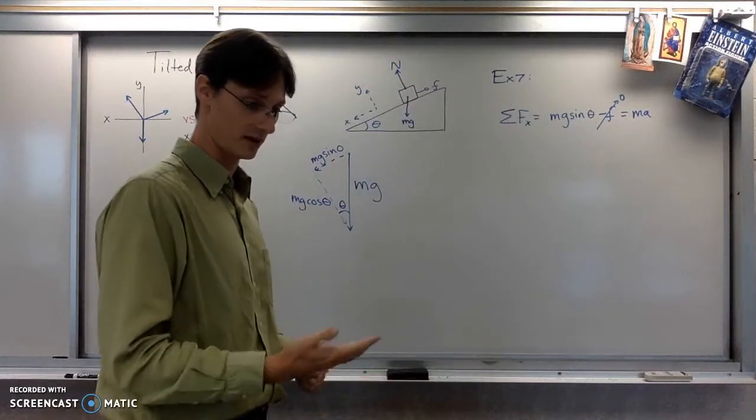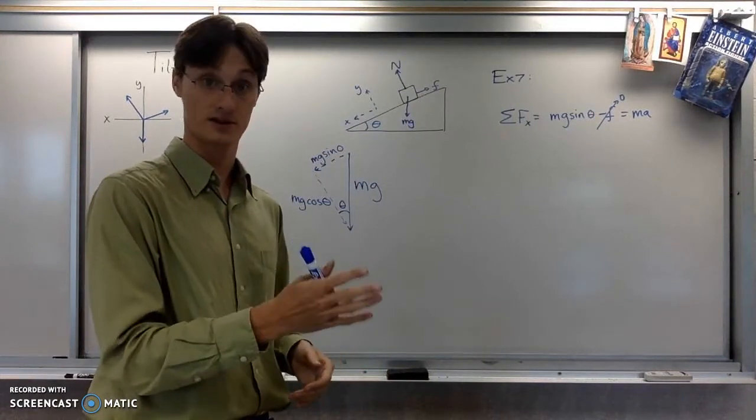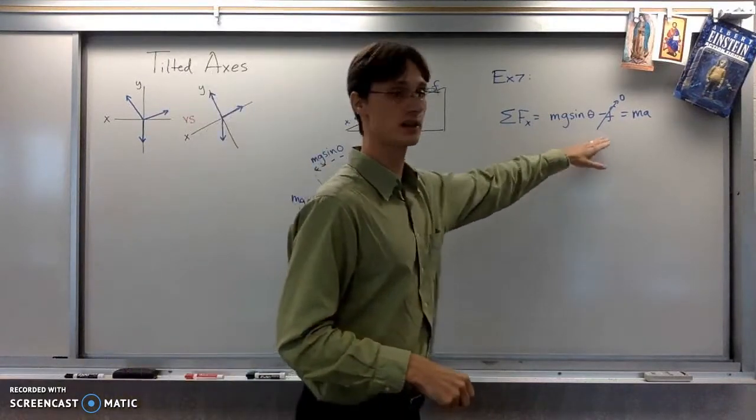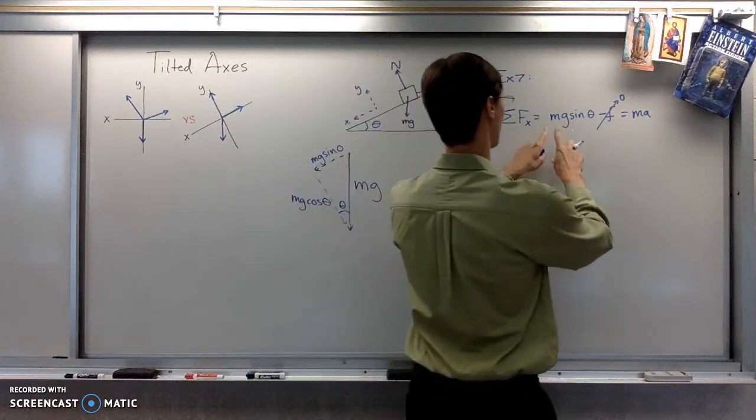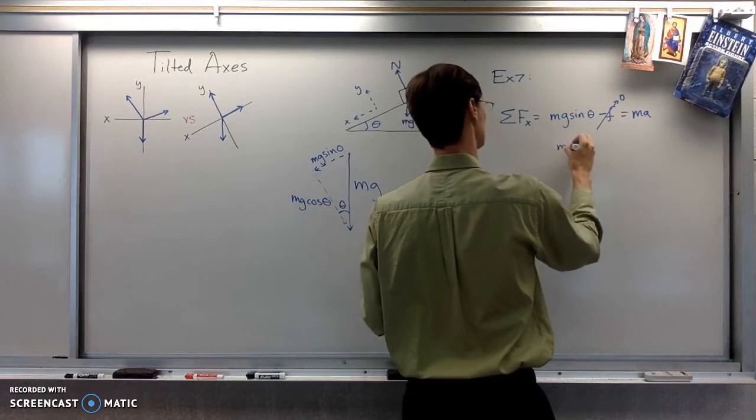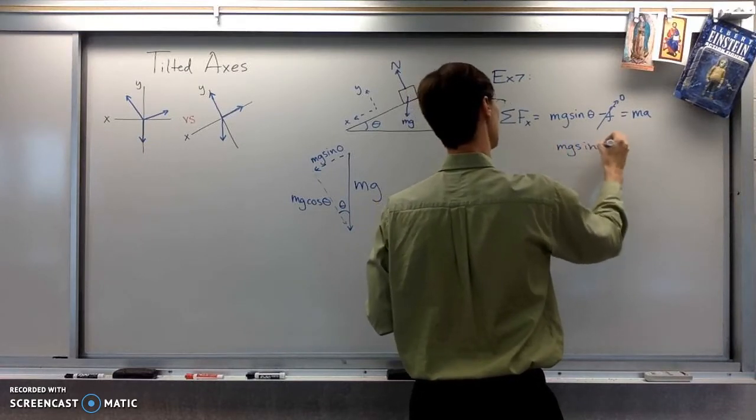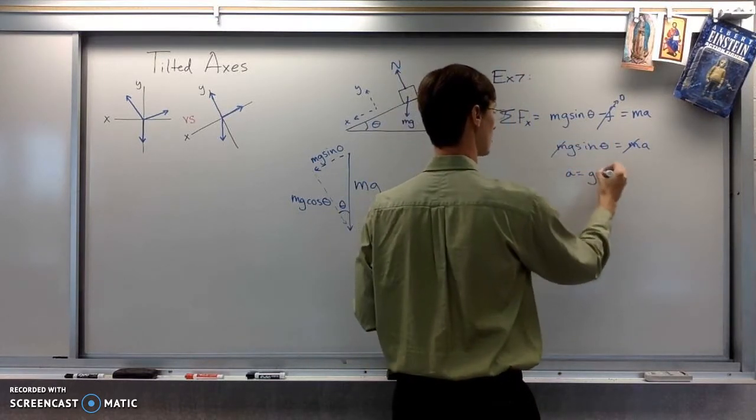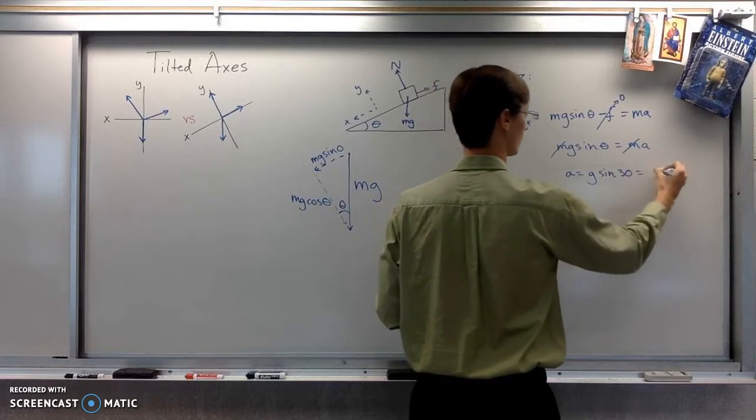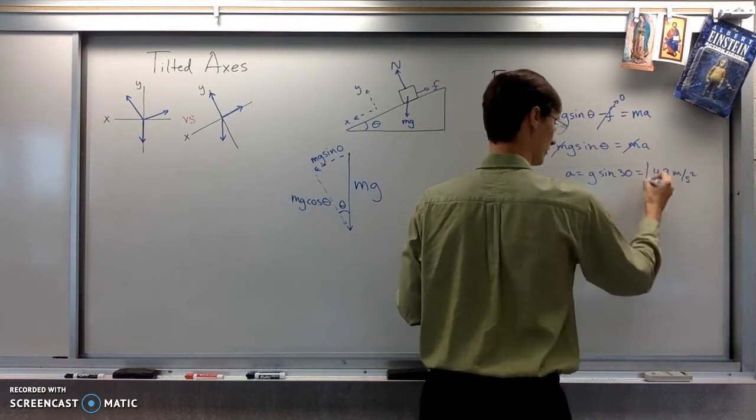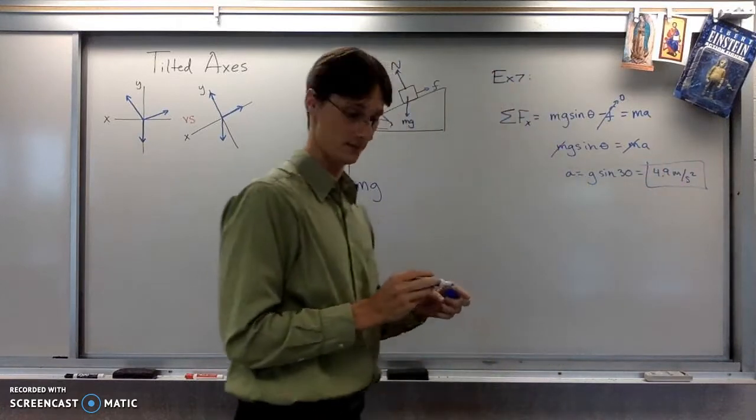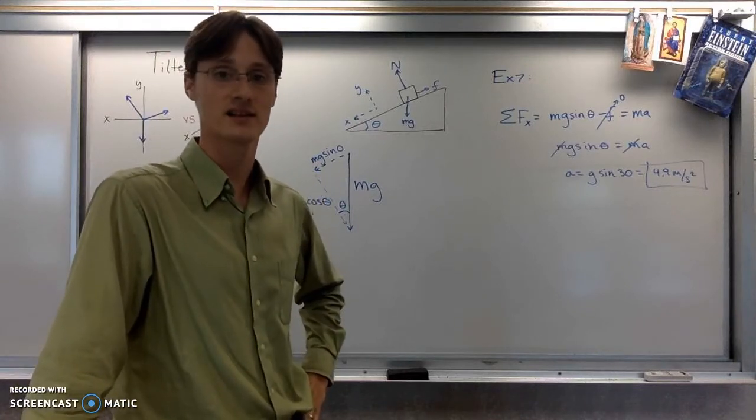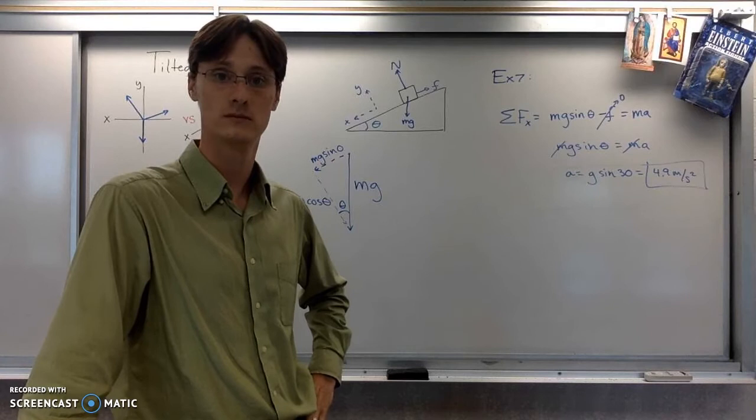The question here now for part b says, all right, these are the things. If the angle is 30 degrees, the mass is 2 kilograms, what's the acceleration of the block? It said friction was zero in this first part of the question. So I've got mg sine theta equals ma. The m will cancel out. And that means that the acceleration is g times sine of 30, which in our calculators will come out to 4.9 meters per second squared. So part c now asks, did the mass affect the acceleration? Nope.